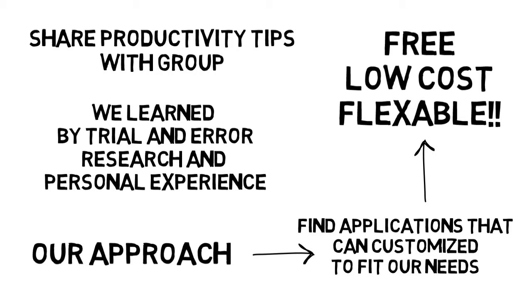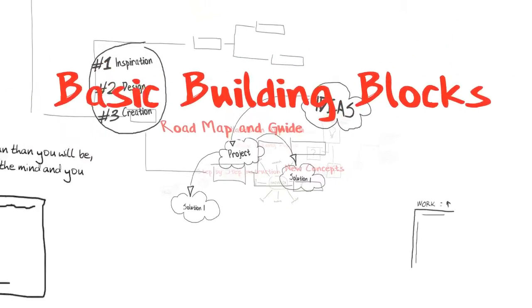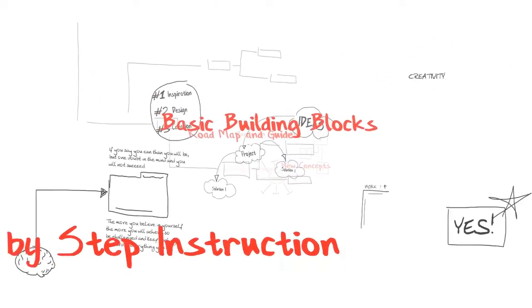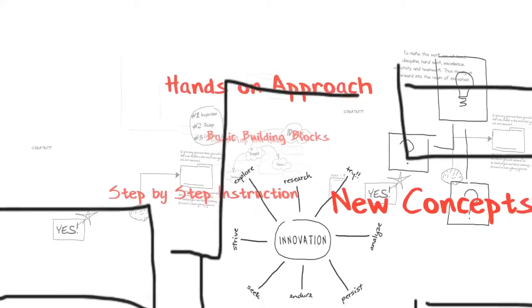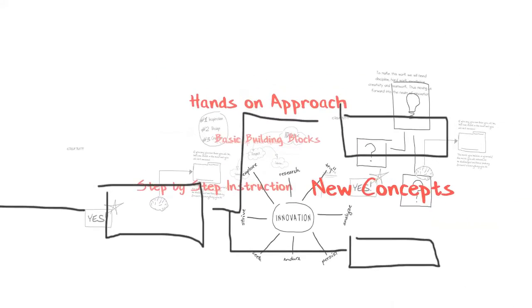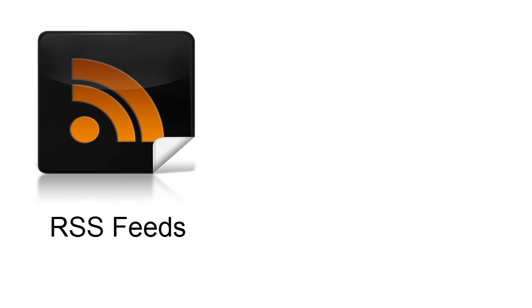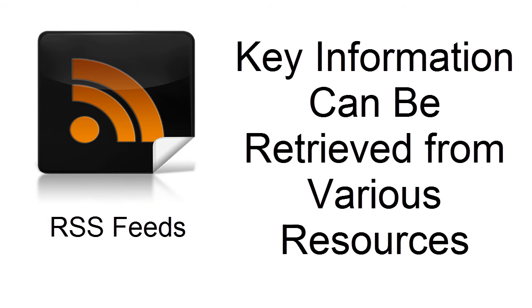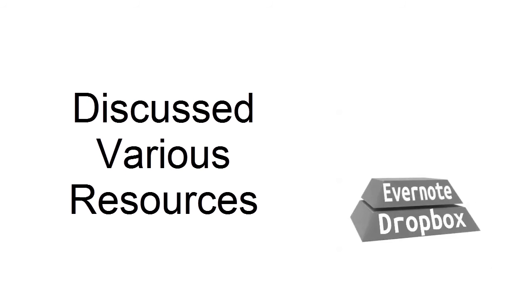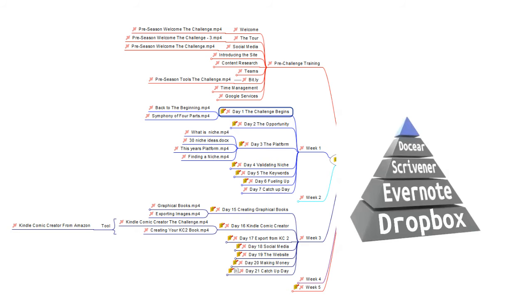Our seminar presented a roadmap and personal guide to emphasize time-saving tips and techniques to increase productivity by providing several basic building blocks along with hands-on, step-by-step tutorials. For example, we introduced the use of RSS feeds, a tool where key information can be retrieved from various resources by utilizing automation without going from website to website. We touched briefly on the use of some of the following applications: Dropbox, Evernote, Scribner, Dahlgear, MyMaps, and other applicable technology.